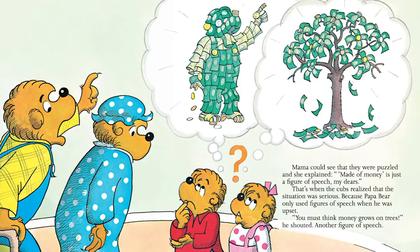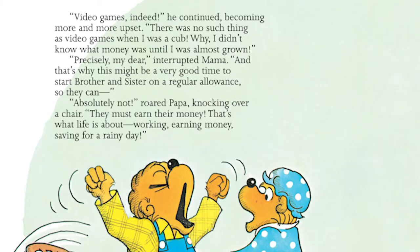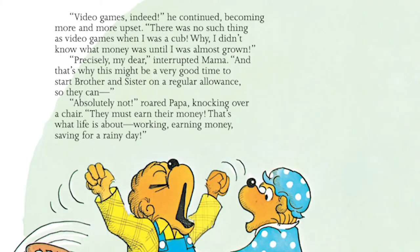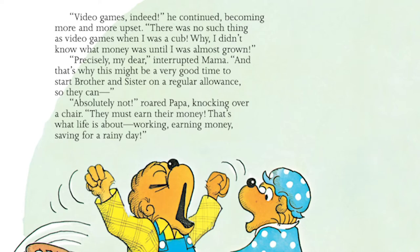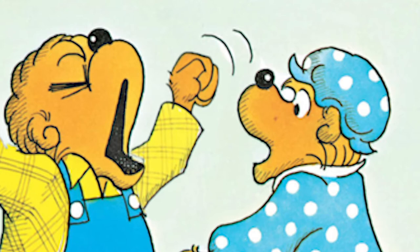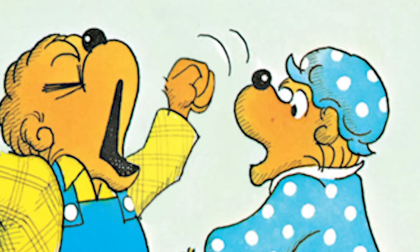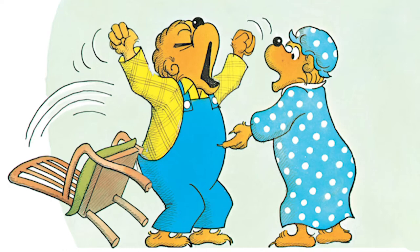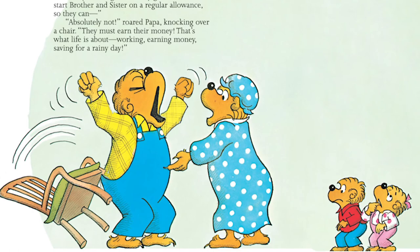"Video games indeed," he continued, becoming more and more upset. "There was no such thing as video games when I was a cub. Why, I didn't even know what money was until I was almost a grown-up," he said. "Precisely, my dear," interrupted Mom. "And that's why this might be a very good time to start Brother and Sister on a regular allowance." "Absolutely not," Papa said, knocking over a chair. "They must learn how to earn their own money. That's what life is about — working, earning money, and saving for a rainy day." The Cubs knew how serious the situation must be because Papa used three figures of speech and knocked over a chair.